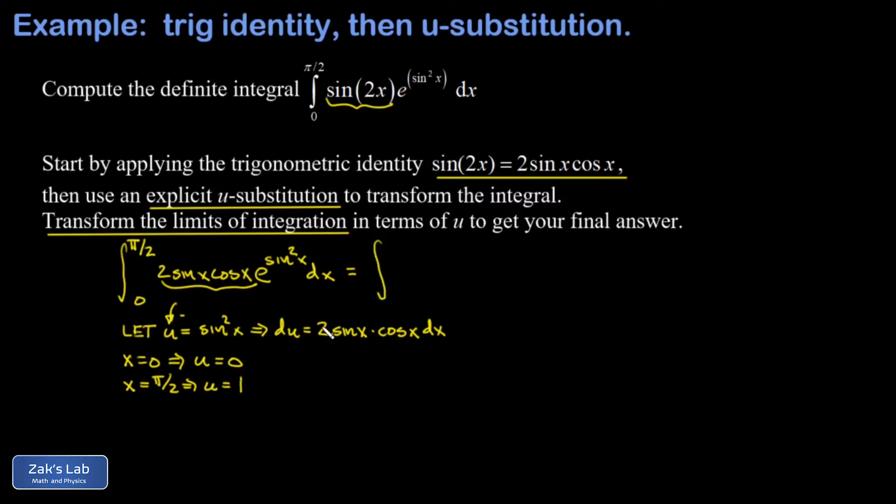Now our integral has been transformed entirely in terms of u. And I'm integrating as u goes from 0 to 1. Then e to the sine squared x is just e to the u. And then 2 sine x cosine x times dx, that's just du.